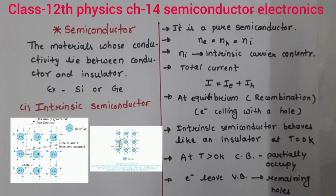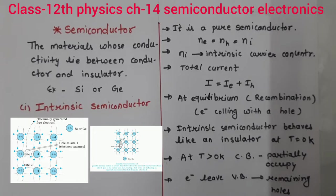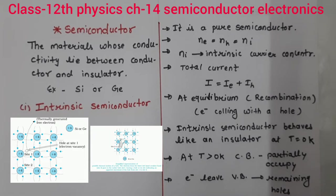Hello friends, welcome back to the class of NPC. My name is Tripti and today we will discuss about the types of semiconductor. There are two types of semiconductor: intrinsic semiconductor and extrinsic semiconductor. In our last video lecture we discussed about the introduction of semiconductor, vacuum tube and classification of metals. So let's start our class on semiconductor devices.